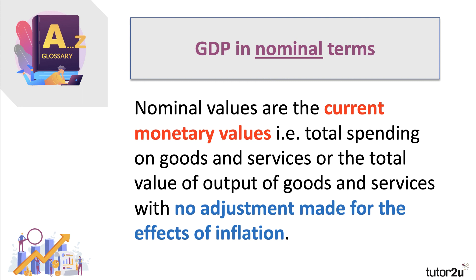A nominal value is basically a current monetary value. If I go to the supermarket and spend four pounds on a meal deal, that's a nominal price — it has a nominal value of spending, but it's not adjusted for the effects of inflation.